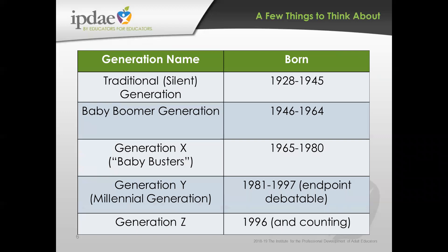Generation Z is anyone born after 1996-97, with some discussion on that. The projections are they're going to be 40% of the population by 2020, so they're a group we're just starting to see in our classrooms. They are very, very different. Each generation brings very interesting learning styles and attitudes towards education. We still have some of our traditional folks who come into our classroom — those are about 73 and up — but we look at five very different generations in the classroom.